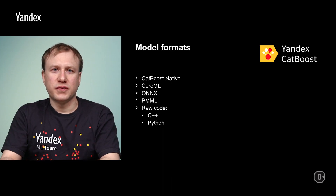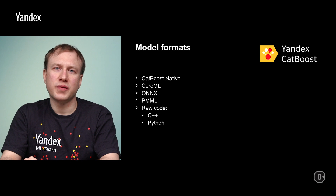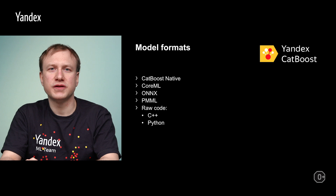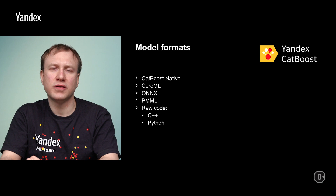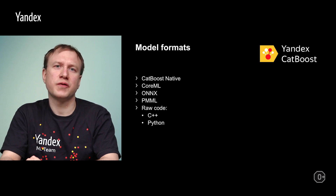CatBoost supports an extensive list of popular model formats. The CatBoost native format is the primary file format. CoreML is used primarily by Apple ecosystems. ONNX is a well-known model format for neural networks that also supports decision tree model types. PMML is another common model format. Finally, it is even possible to export a CatBoost model as source code in either Python or C++ programming language, which is most library-independent and the compiled C++ code can be quite performant.